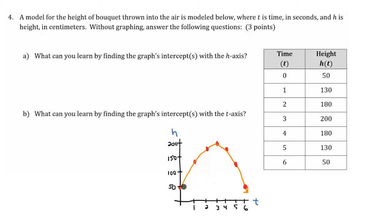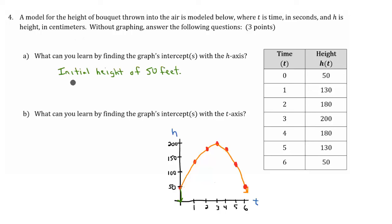So what does 50 mean? In this situation, we have a bouquet being thrown through the air. The height of 50 happens when our time is zero. If we follow this point down to the horizontal axis for time, our time is zero. So at zero seconds, our height is 50 — that represents the starting point of the bouquet. So before it was thrown, it started with an initial height of 50 feet. You could also point out that this happens when time is zero seconds.